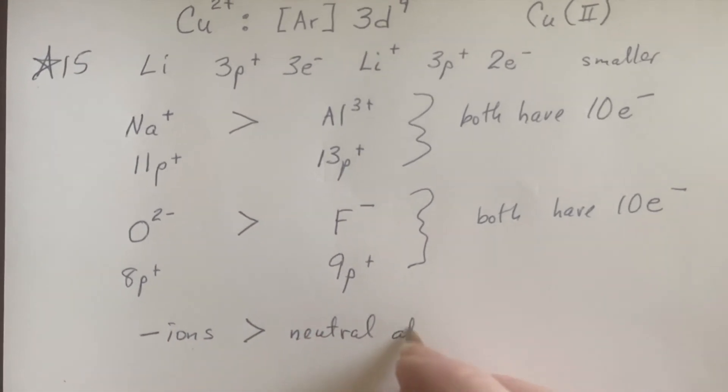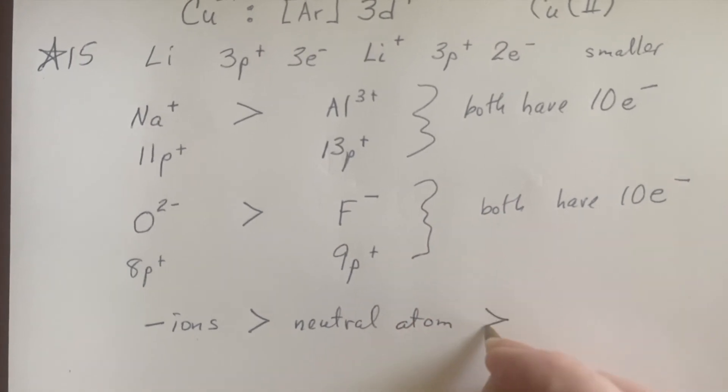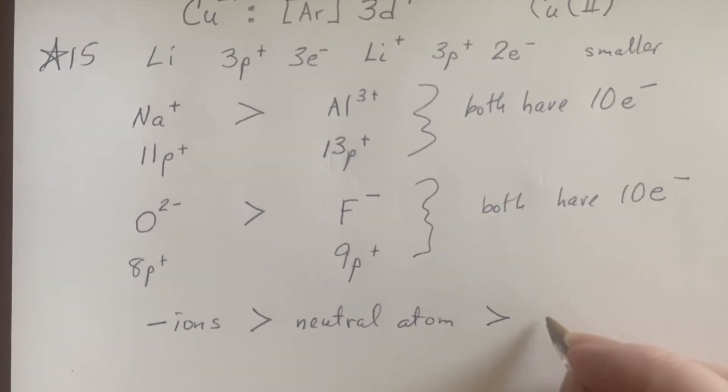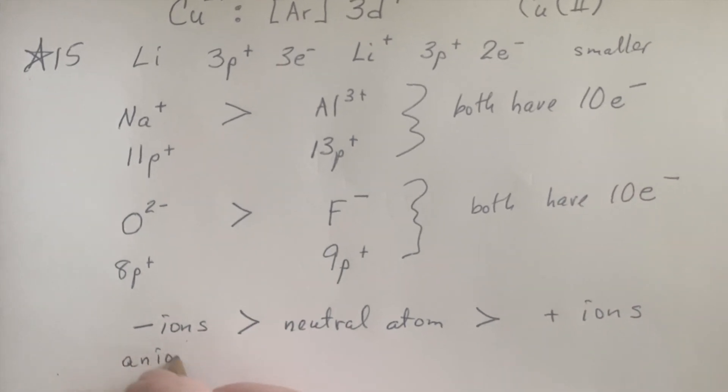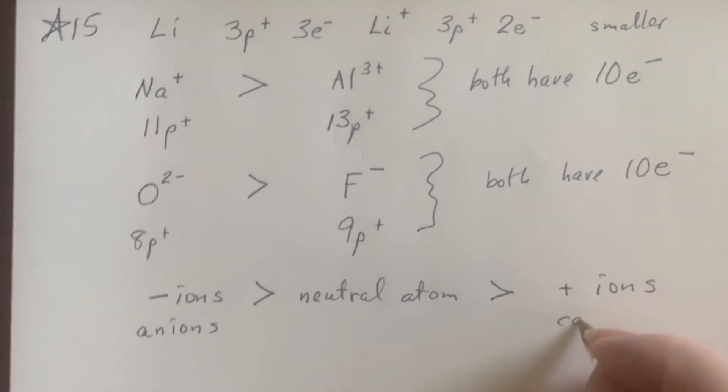And then lastly, just to re-emphasize: your negative ions are always larger than the neutral atom. The neutral atom is always larger than the positive ions. And remember, these are called anions and these are called cations.